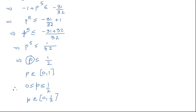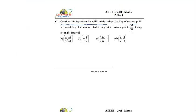Let us see which is the correct option. We can see that option p, the interval [0, 1/2], is the correct answer. Is it clear to everyone?